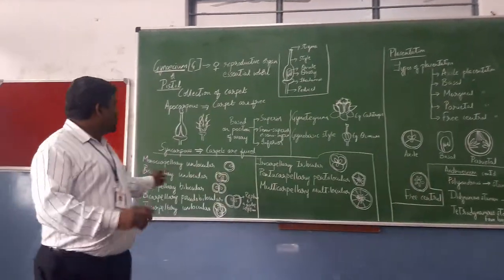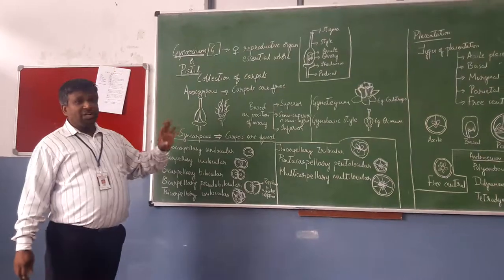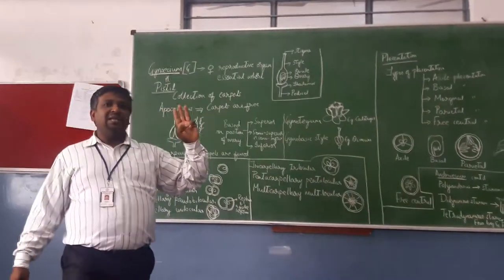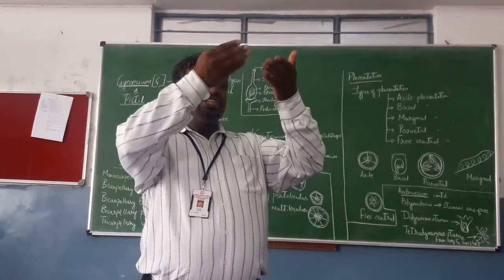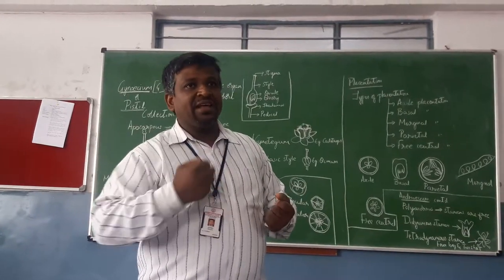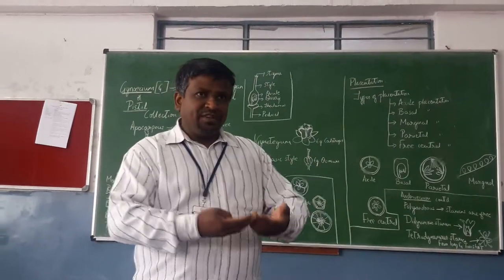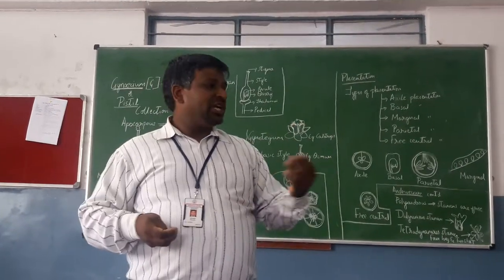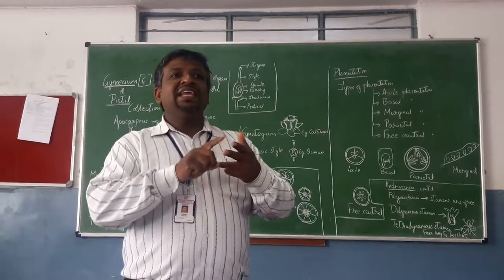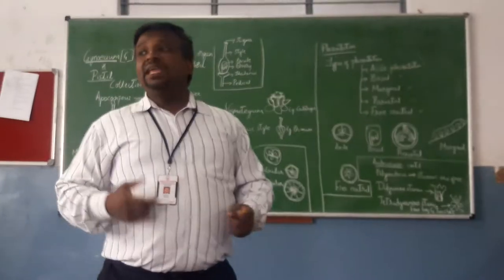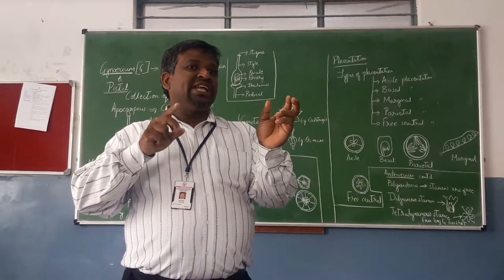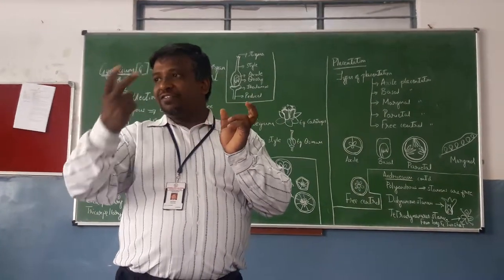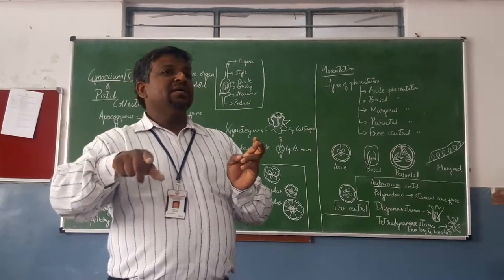Now, based on the position of ovary, we have already discussed three types of flowers. Epigynous — the other whorls are above the gynoecium, so the ovary will be inferior. Hypogynous — from below the gynoecium, the other whorls (calyx, corolla, and androecium) arise from below the ovary, so the ovary is superior. Then perigynous ovary — it has a half cup-shaped receptacle where the sepals, petals and stamens arise from the rim.